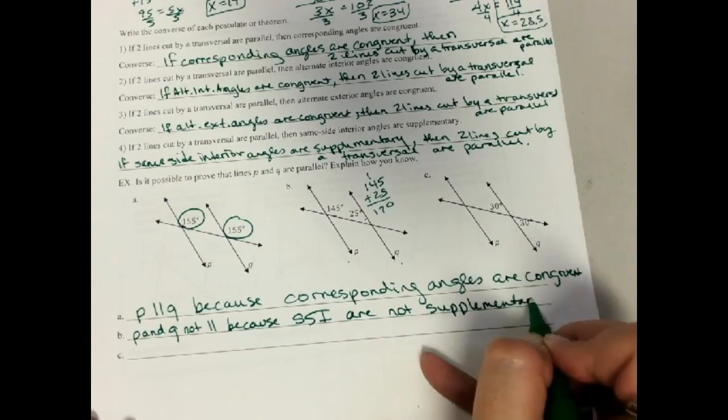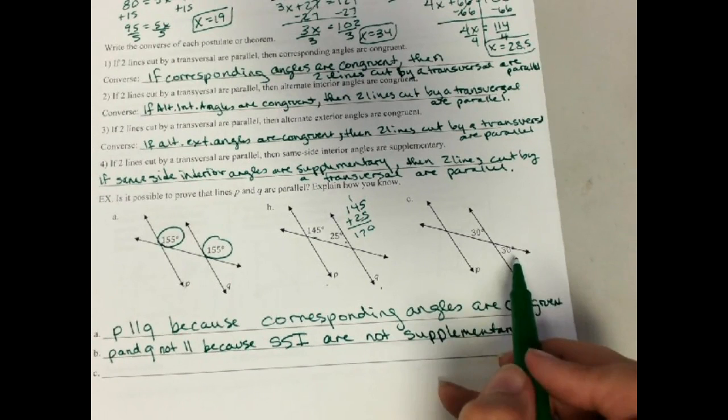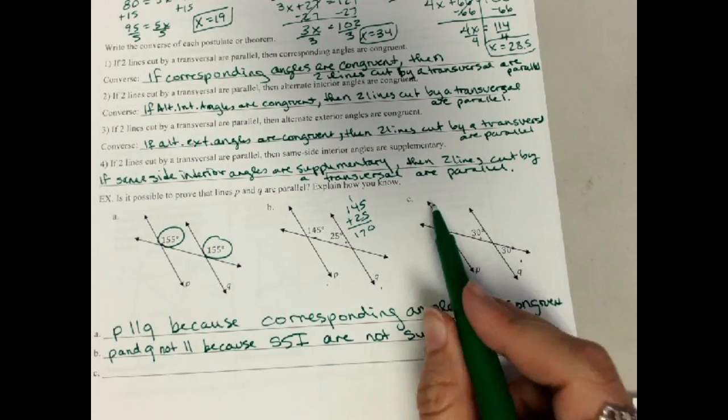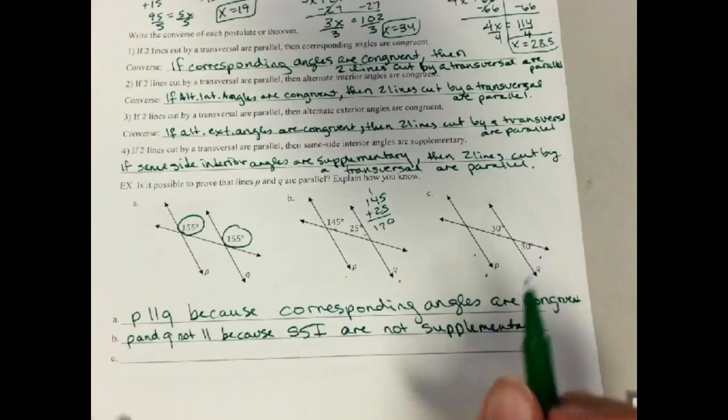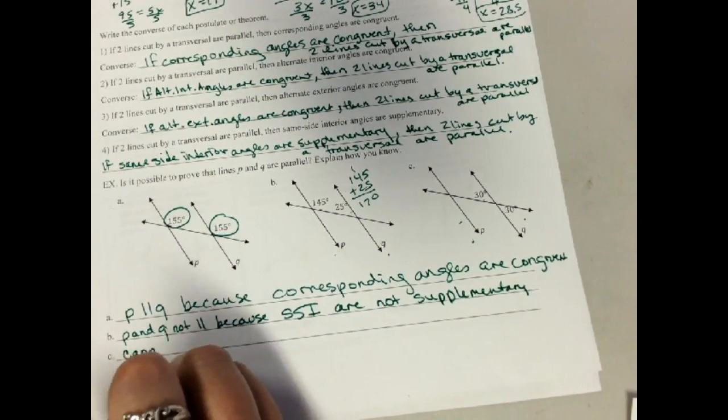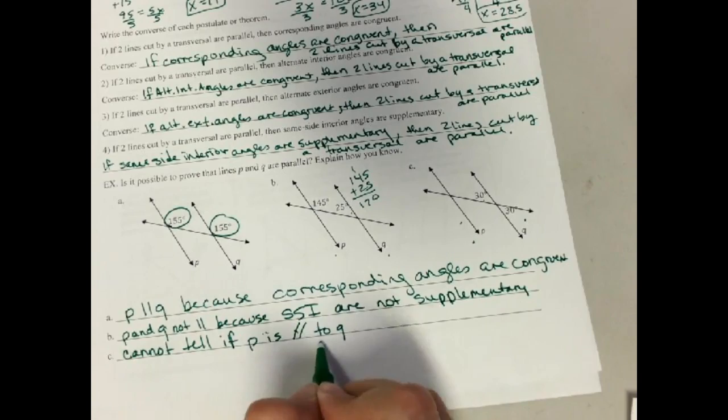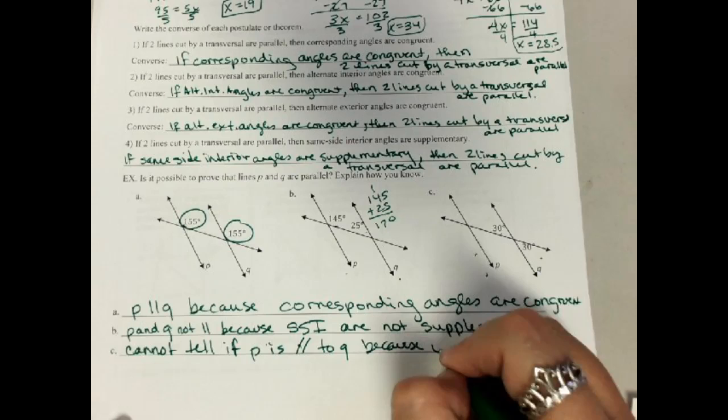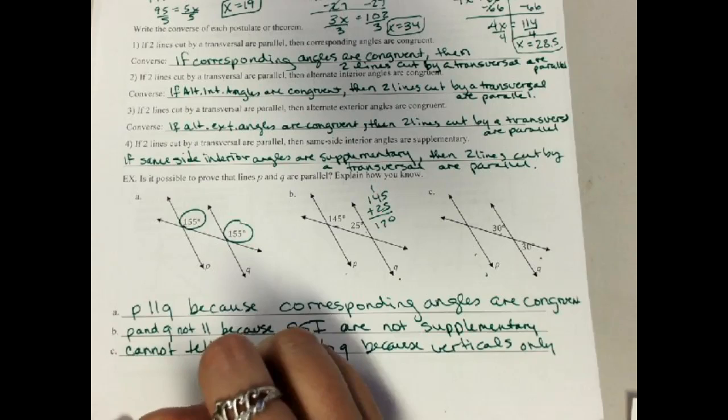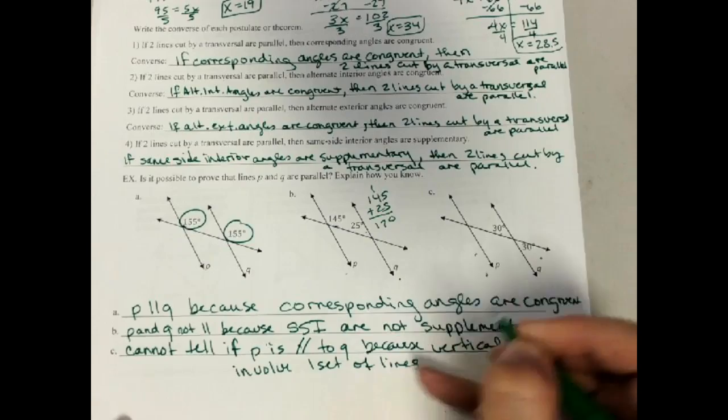And finally here, what are those two angles? Well, those are vertical angles, and vertical angles should be congruent. But do those two vertical angles tell me anything about line P? They don't have anything to do with line P. I can't tell on this one if they're parallel. I cannot tell if P is parallel to Q because vertical angles only involve one set of lines. They only involve this set of lines over here. They have absolutely nothing to do with P, so I can't tell anything about that.